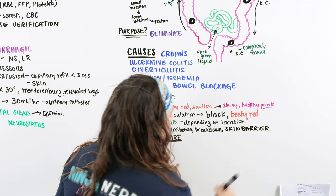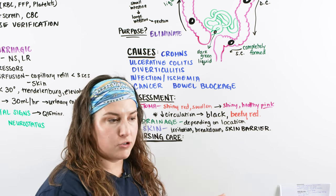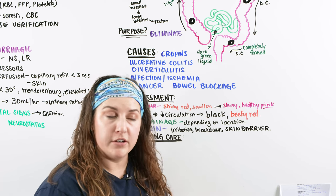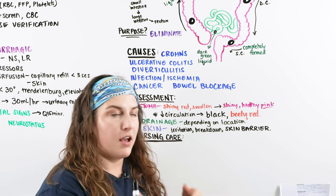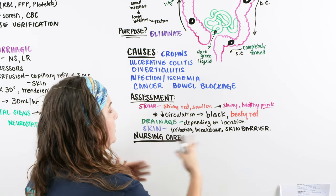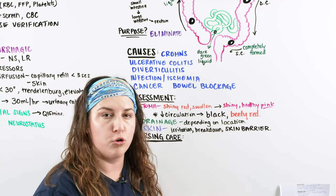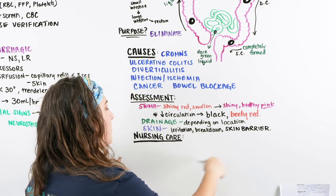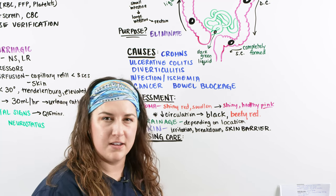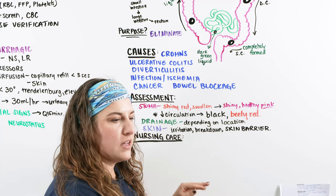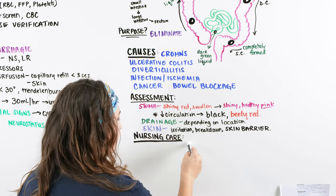We should also think about using a skin barrier — products we can put there to protect the skin. If the skin becomes very irritated, the patient is going to be less likely to want to change their drainage system, which will lead to more breakdown. We need to teach and assess them about what to look for: is it red, is it flaking, is it looking angry or shinier than normal? If so, they may need a skin barrier applied.